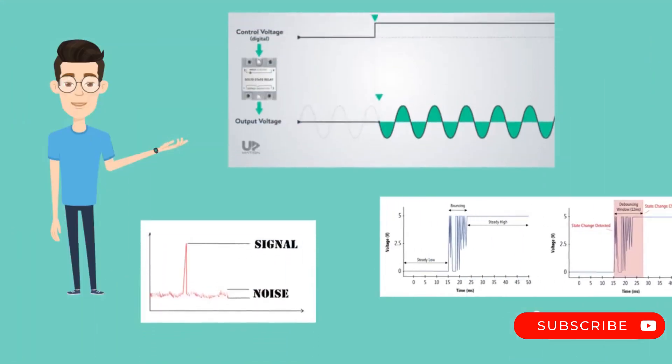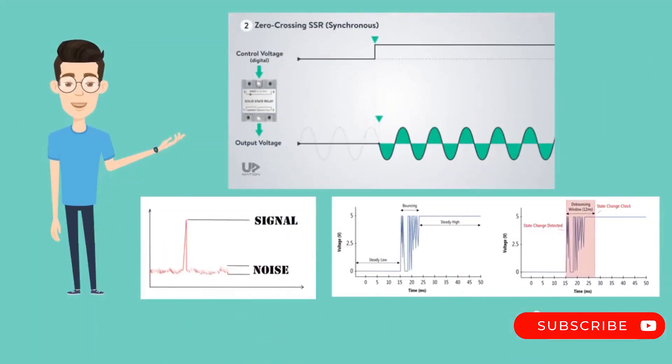One of the biggest advantages of solid-state relays over an electromechanical relay is its ability to switch off AC loads at the point of zero load current, thereby completely eliminating the arcing, electrical noise, and contact debouncing associated with conventional mechanical relays and inductive loads.